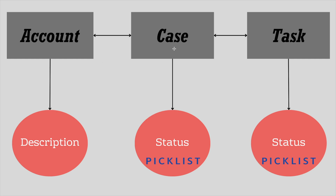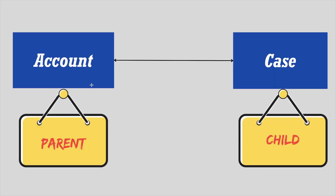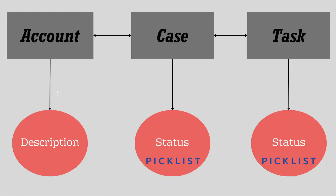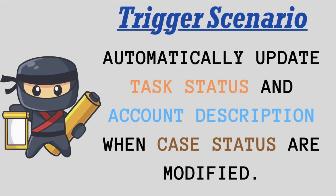In today's scenario we are going to use three objects: Account, Case, and Task. Between Account and Case, Account is the parent and Case is the child. Between Case and Task, Case is the parent and Task is the child. From Account we use the Description field, from Case we use the Status field which is a picklist containing values like New, Working, Escalated, and more. From Task we also use the Status field, which contains all the values present in Case Status field.